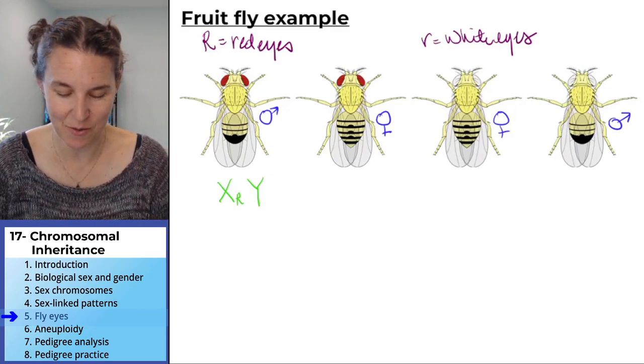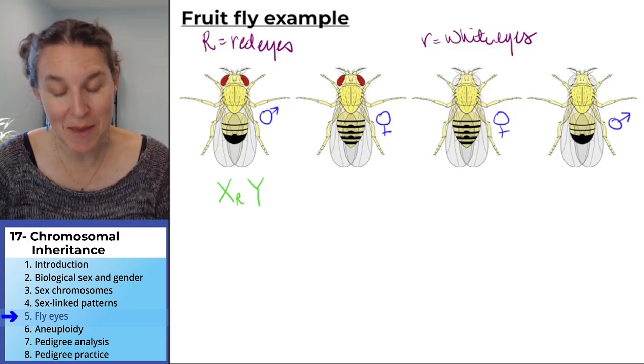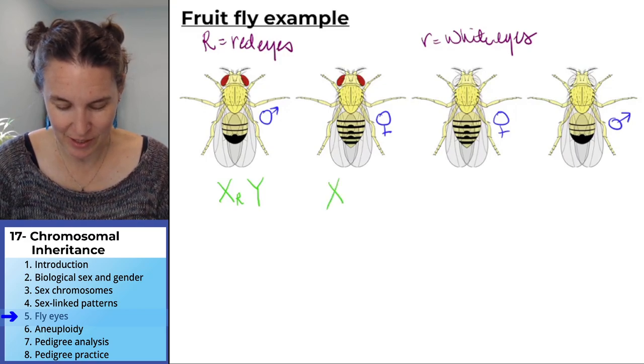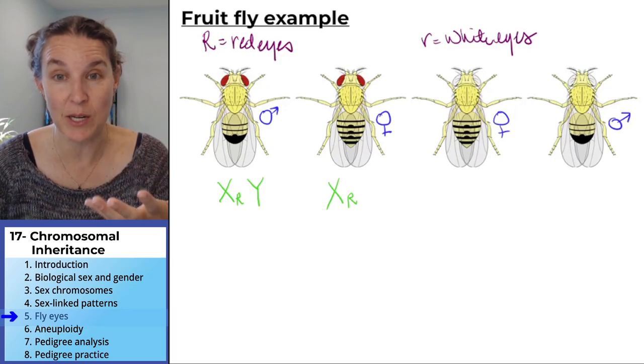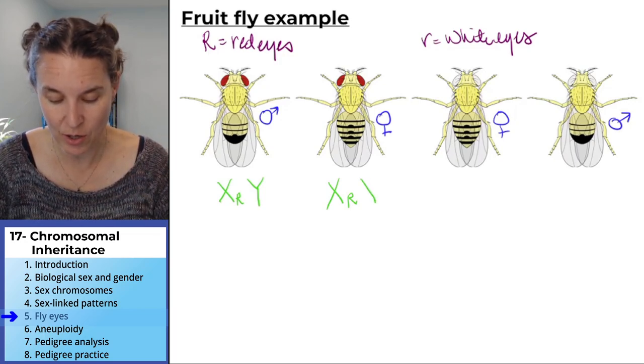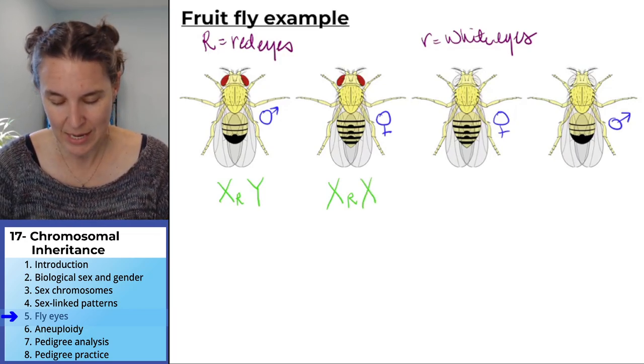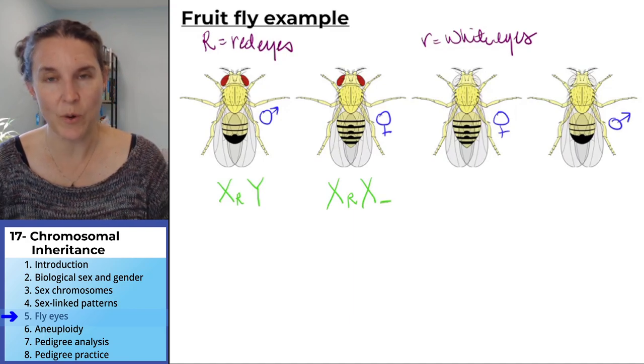The female is the one who—we know she has at least one big R because she's expressing the dominant trait. However, her other X chromosome, sometimes you put it like this where you go...